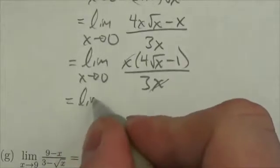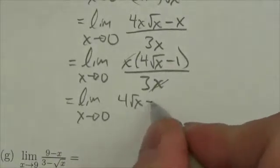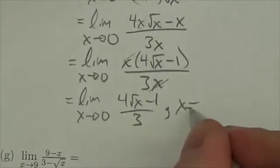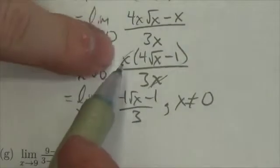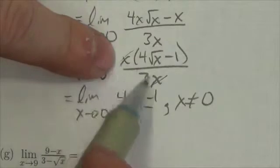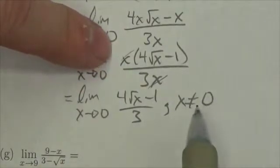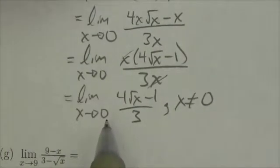So this will become the limit as x approaches zero of 4 root x minus 1 over 3. Now this is true as long as x is not allowed to equal zero. Don't say cancel but x divided by x is 1 so long as x is not equal to zero. But that is okay because I'm taking the limit as x approaches zero. I'm never actually gonna get there.